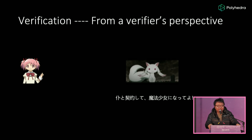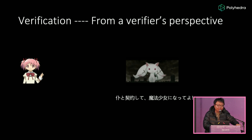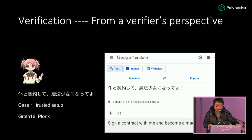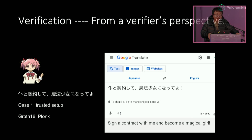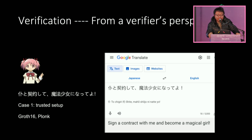And to verify these claims, the verifier needs someone to help her. One way to solve the problem is to leverage a trusted third party that can help you understand the claim. In this example, we are using Google Translate, where you trust Google to translate this sentence for you. And in the ZKP world, it's usually called a trusted setup, where you rely on a trusted third party to do some computation to identify the content of the circuit.